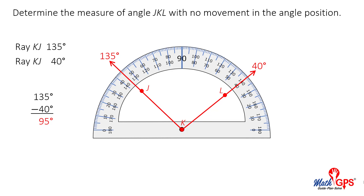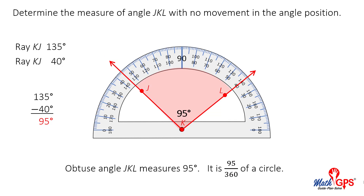Let's count to see if the angle measures 95 degrees: 10, 20, 30, 40, 50, 60, 70, 80, 90, 95. Obtuse angle JKL measures 95 degrees. It is 95/360ths of a circle. Angle measures can be determined by subtraction or counting degrees if necessary.